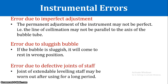The next error is due to defective joints in the leveling staff. Leveling staffs are available in lengths of 2 to 5 meters. If we have a telescopic staff that needs to be extended, any defects in the joints where the sections meet will cause errors in the staff readings.